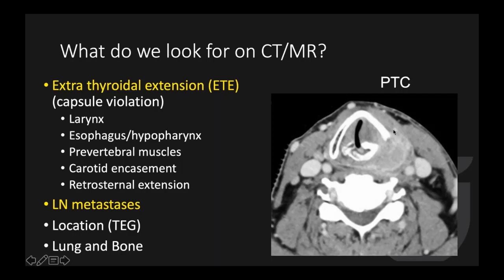Here is a papillary thyroid cancer extending into the larynx through the cricothyroid junction. Notice this cricothyroid junction looks pretty normal, but it is widened by the mass with truncation and destruction of the thyroid lamina. There is sclerosis of the cricoid and arytenoid cartilages, and the tumor also extends into the retrocricoid hypopharynx. These are very important findings because the surgeon needs to perform not only total thyroidectomy but laryngectomy if this patient needs surgery.